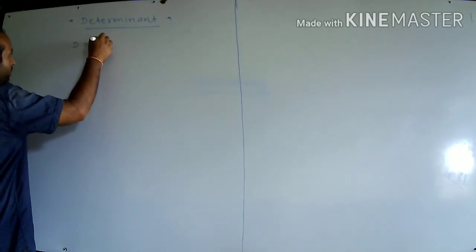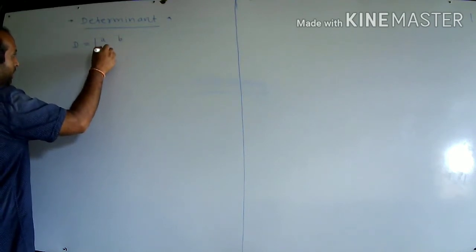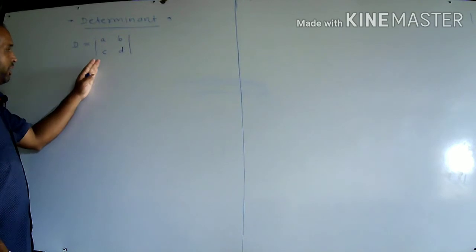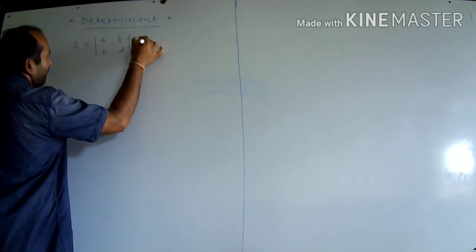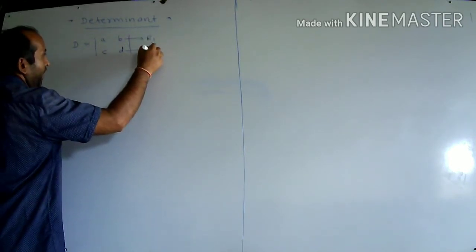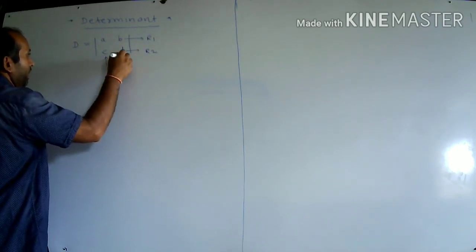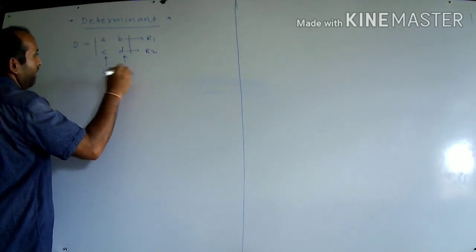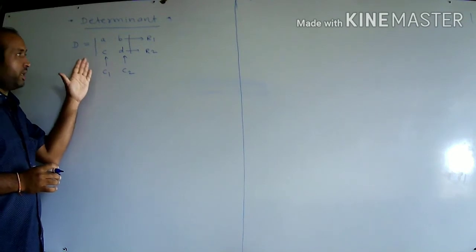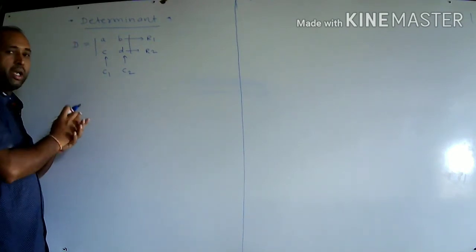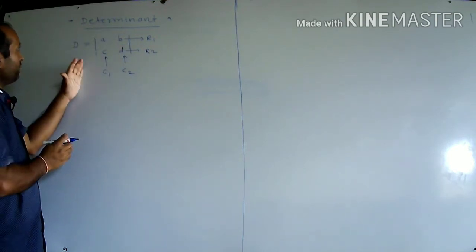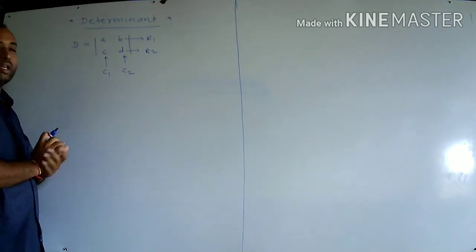Suppose D has elements 1, 2 in a structure given as A, B, C, D. In this arrangement, there are two rows — R1 and R2 — and two columns — C1 and C2. This arrangement is enclosed by two vertical lines, and such an arrangement is called a determinant.